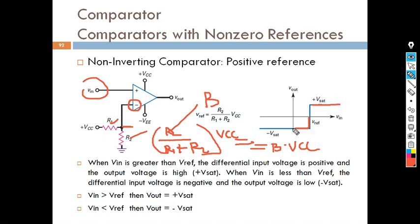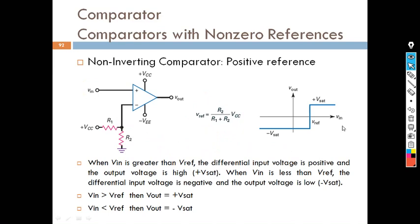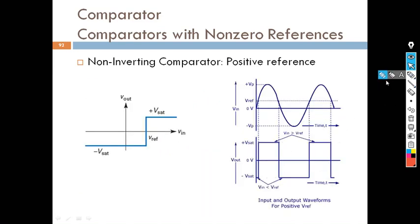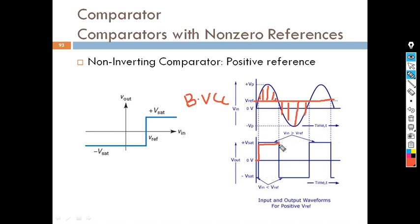We will see this with the diagram. Here you can see this is our reference, which is B·Vcc. When the input is greater than the reference — this is the area greater than reference — the output is positive. When the input is lesser than the reference, the output is negative Vsat. And once again when it crosses back up, output is positive Vsat. This is the non-inverting comparator with a positive reference.